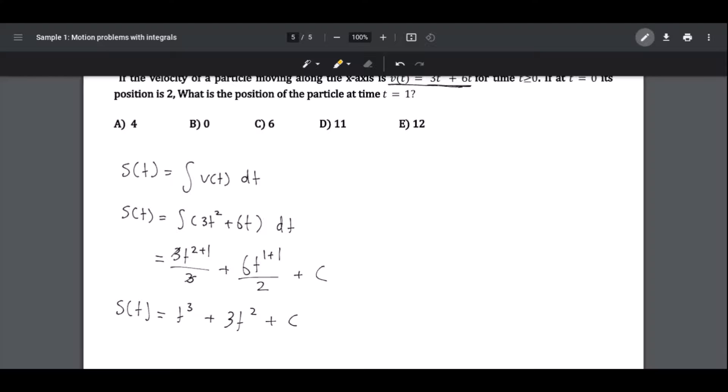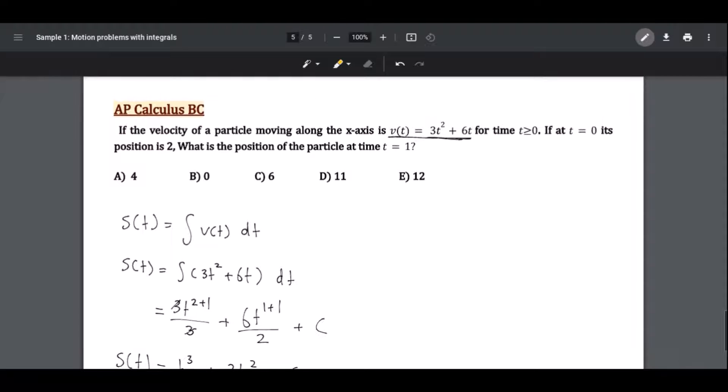Now let's find c. Let's go back to the question. It said that position is 2 when t is equal to 0. So we're just going to replace position with 2 and t with 0.